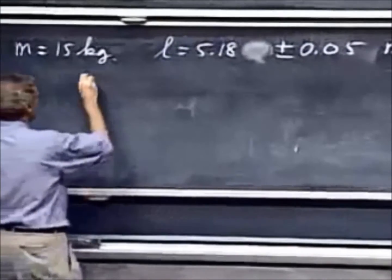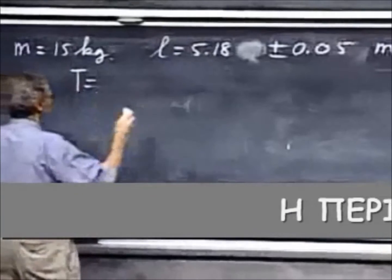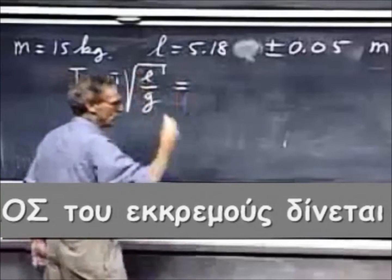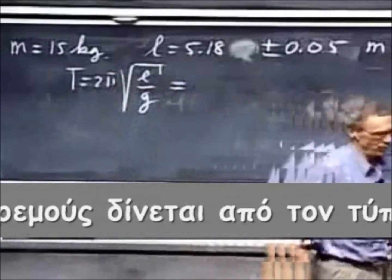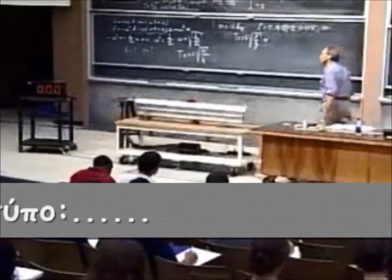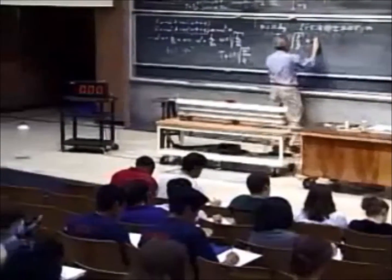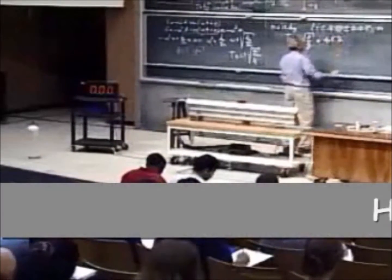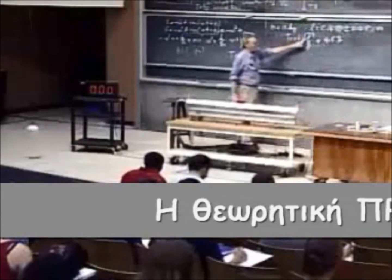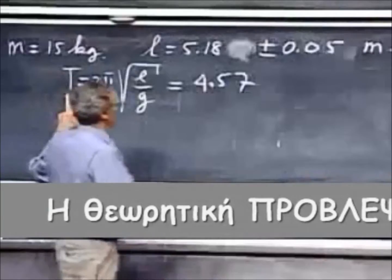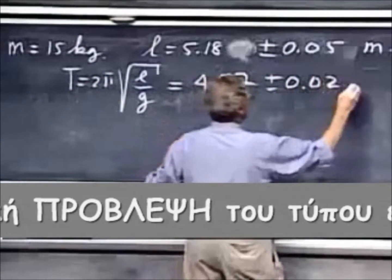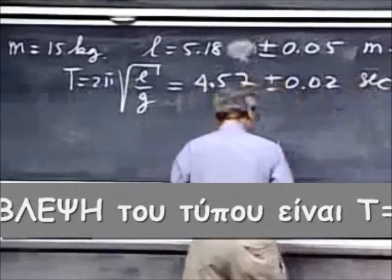The period, which is 2π times the square root of L over G — if you substitute in your length of 5.1 meters, you will find 4.57 seconds. Since you have a one percent error in L, you're going to have a half a percent error in your period, so that is about 0.02 seconds. So this is my prediction.